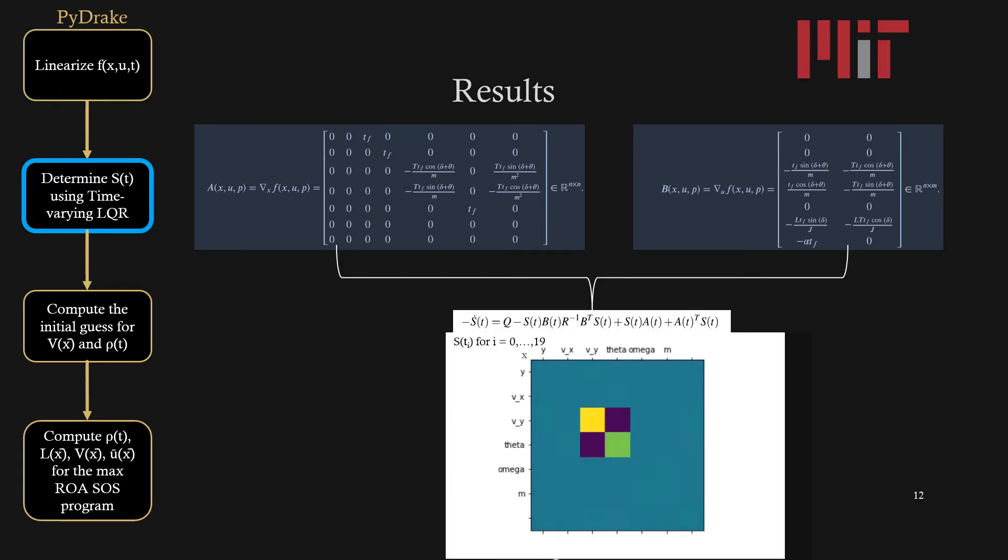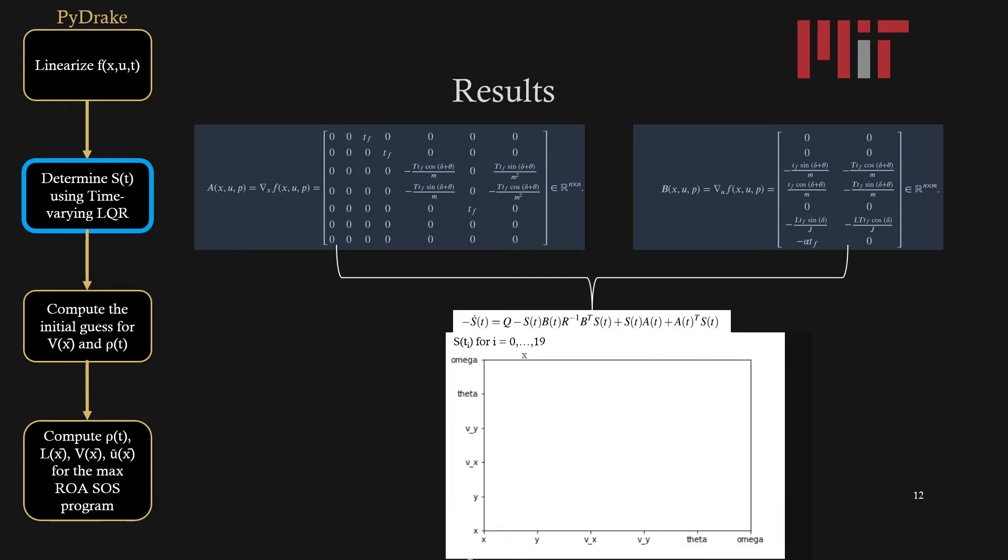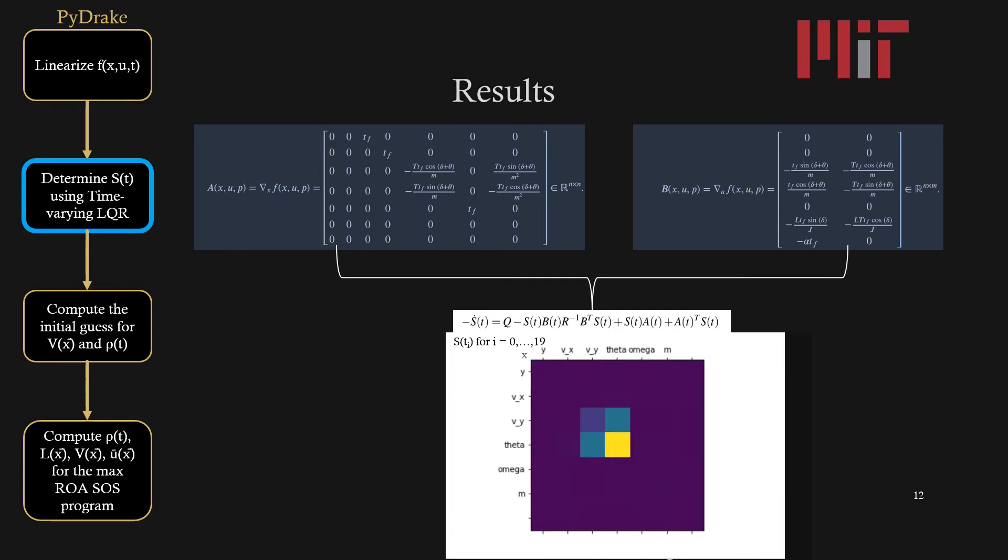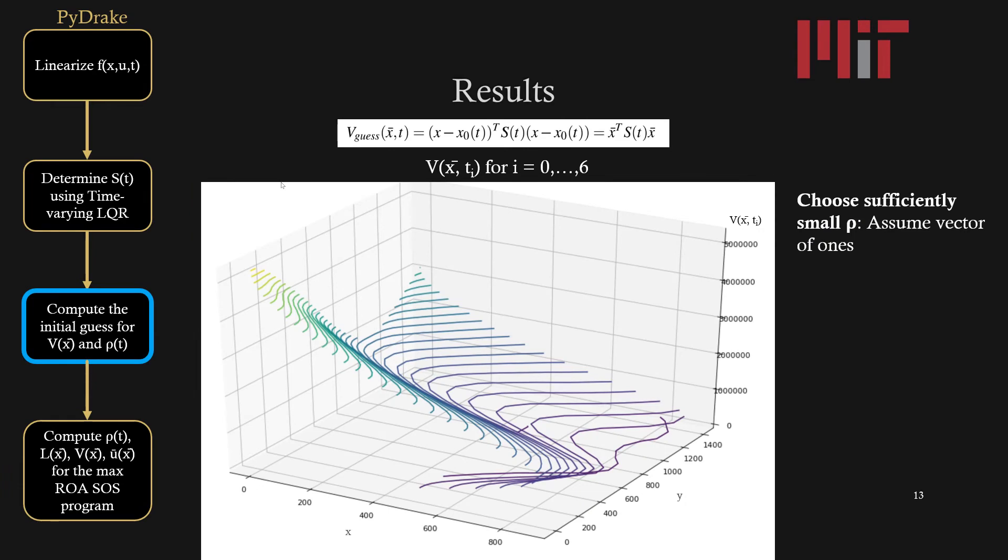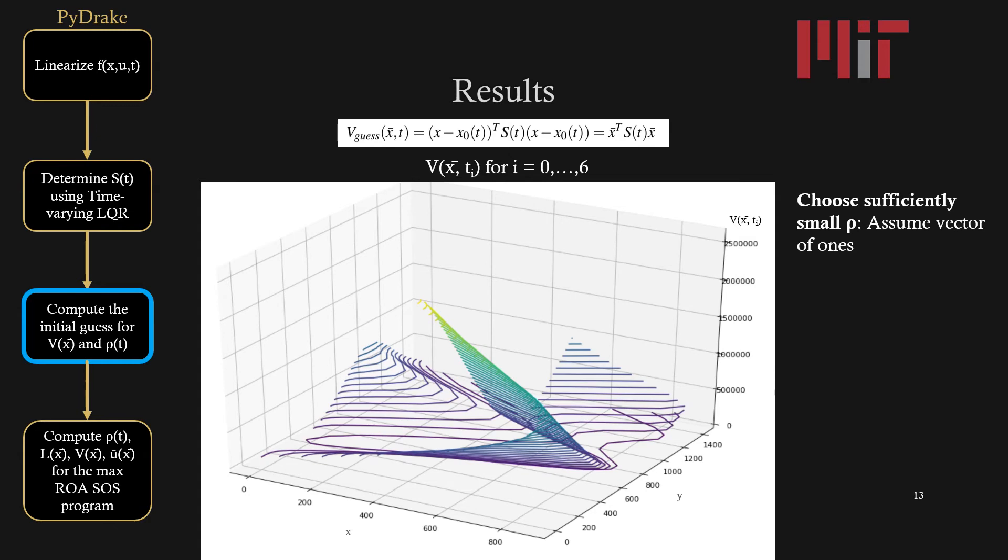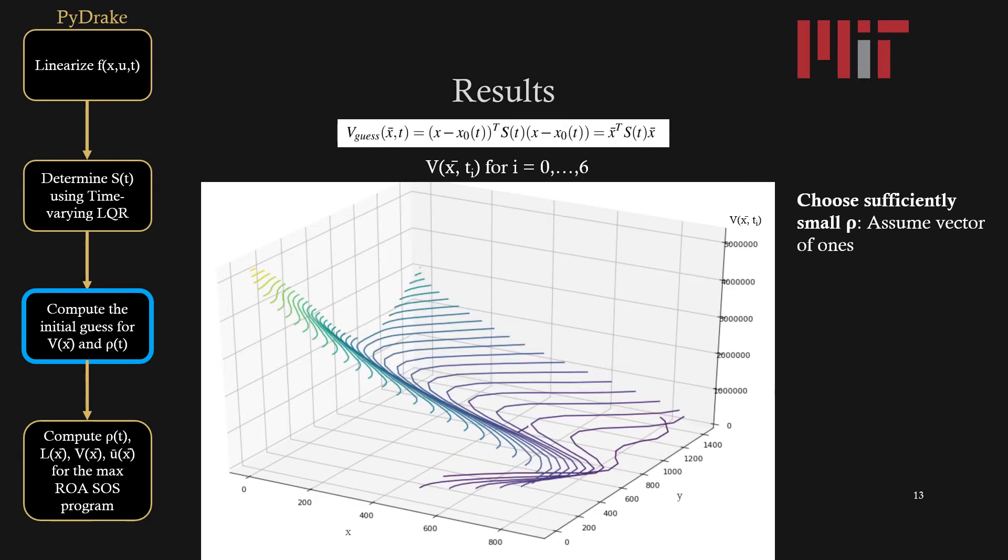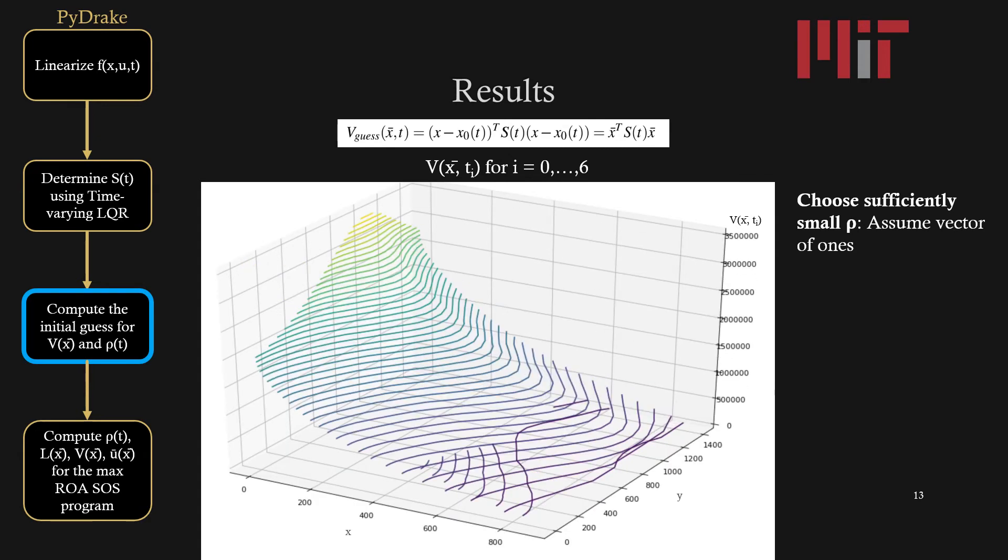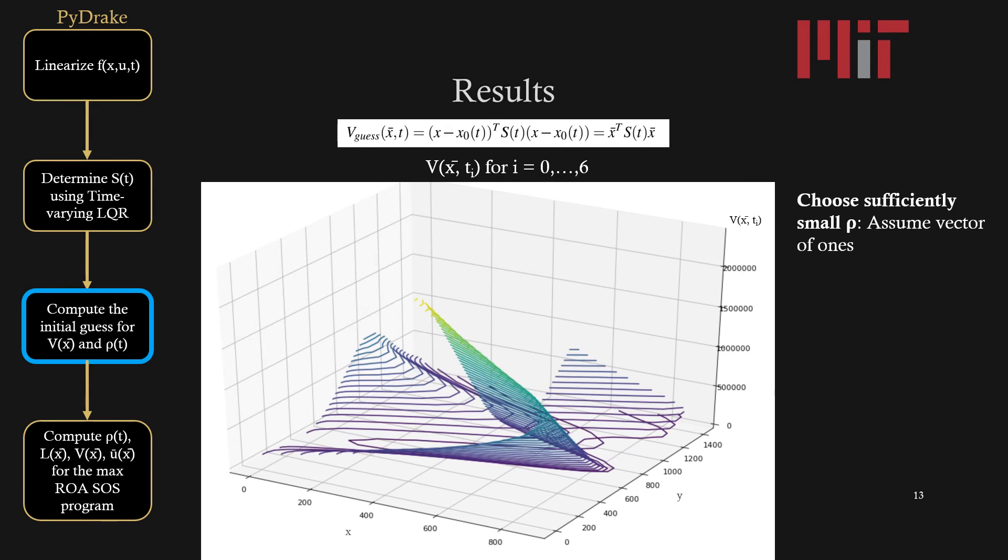I was able to compute S of t for each time step using the linear quadratic regulator equation. The Lyapunov function guess was determined by multiplying x bar, which is x minus the initial trajectory by S of t from the LQR and is visualized below.